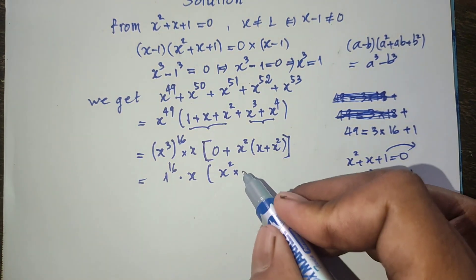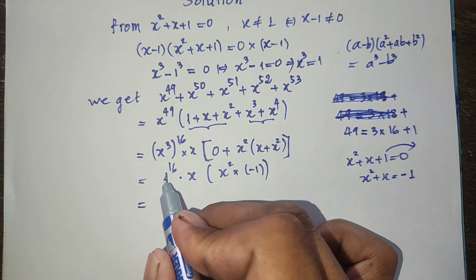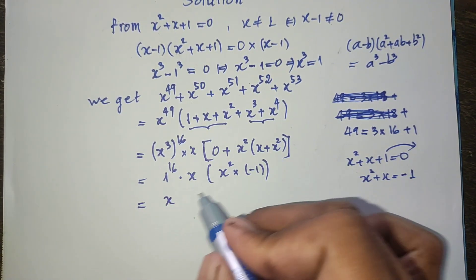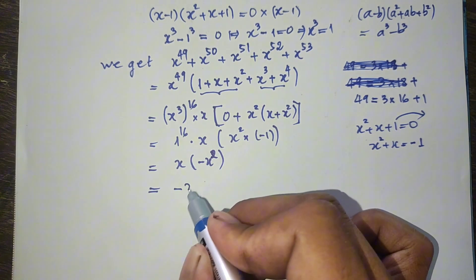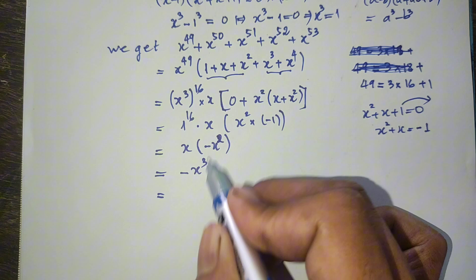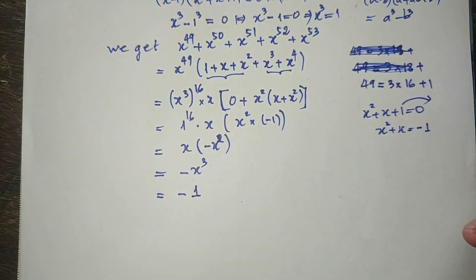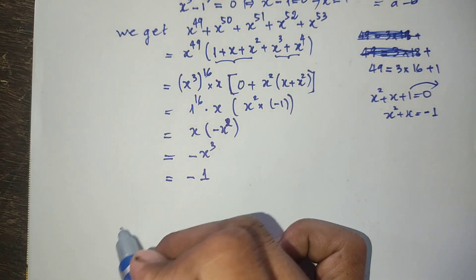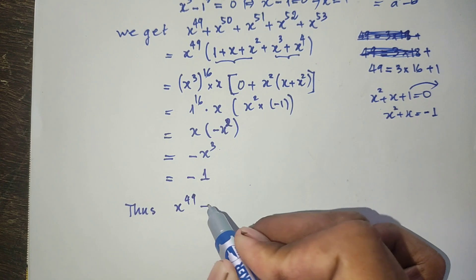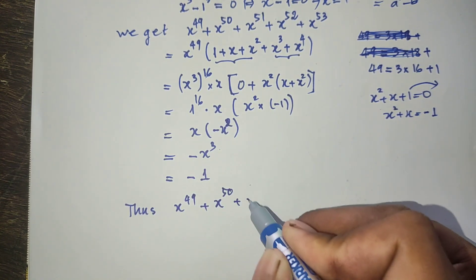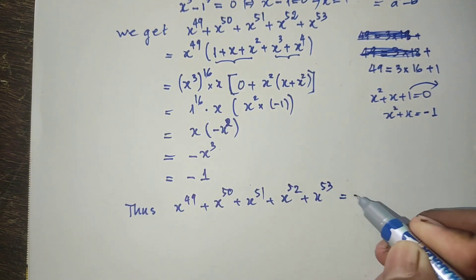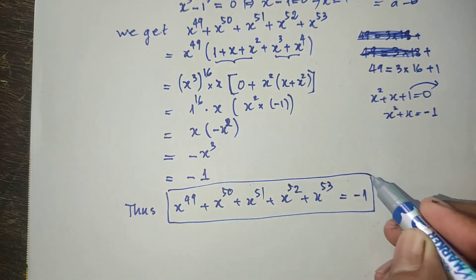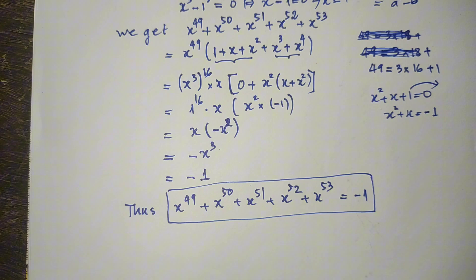So the bracket 1 plus h plus h squared plus h cubed plus h power 4 simplifies using h squared plus h equals minus 1, and h cubed equals 1. We factor and substitute, and the expression becomes equal to minus 1. So the final answer is minus 1.